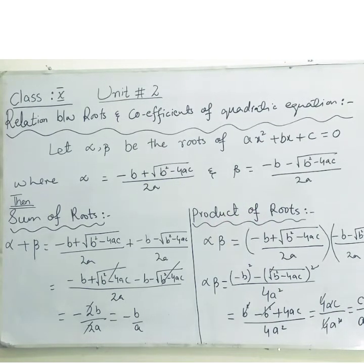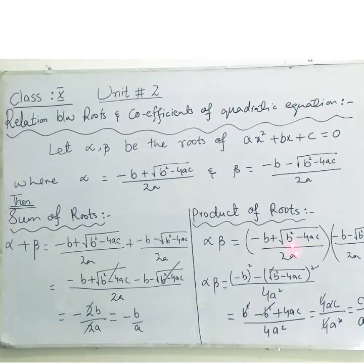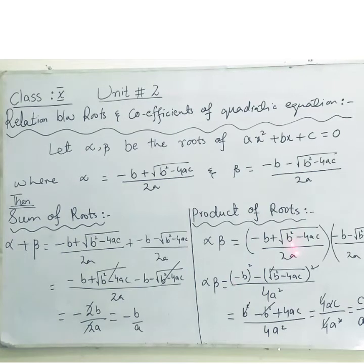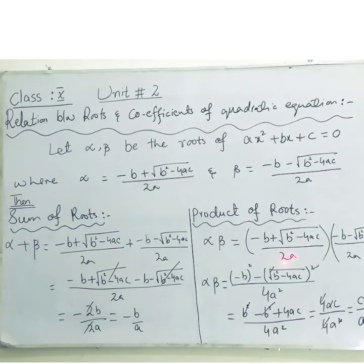Now for the next relation, we find the product of roots. Alpha × beta equals the product of the two root expressions. In the numerator we use the formula (a+b)(a-b) = a² - b², where a is -b and b is √(b²-4ac). This gives (-b)² - (√(b²-4ac))², and the square root and square cancel. The denominator 2a × 2a becomes 4a².